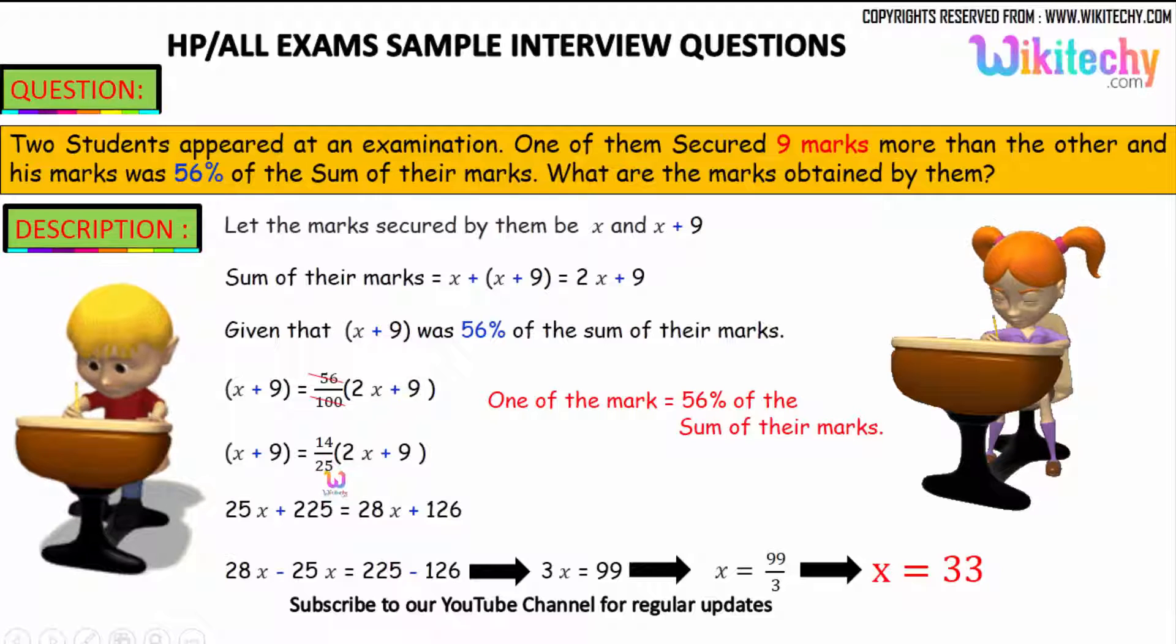This simplifies to 14 by 25. So 25X plus 225 equals 28X plus 126. Moving 25X to the other side and 126 to this side, we get 3X equals 99, and X equals 33.